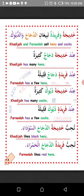Remember, addajaja is the plural form of dajajatun, and adduyuk is the plural form of dikun. Addijkun is the mufrad (singular), and diyukun is the jamu (plural). Dajajatun is the mufrad (singular), and addajaju is the jamu (plural).